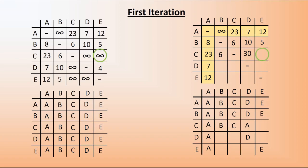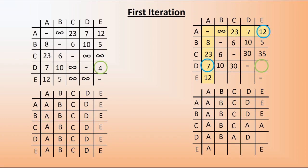For the next cell, we again have an infinite amount, which is definitely larger than 23 plus 12 = 35, so that value goes in and A gets inserted in the route table. Next, we compare 10 with 7 plus infinite — 10 is smaller, no change, so B goes in. Then we have infinite compared to 7 plus 23 = 30, so 30 gets inserted and A is put in. Last on this row, 4 is smaller than 7 plus 12, so 4 goes in with no change to E.